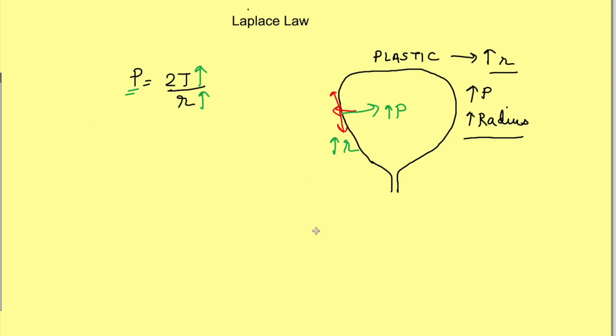The neck of the bladder is very narrow—that means radius is very small—and it is a little bit lengthy also. Whenever we are considering a narrow lengthy tube, Laplace law also considers the length of the tube, so it becomes tension times L as well.